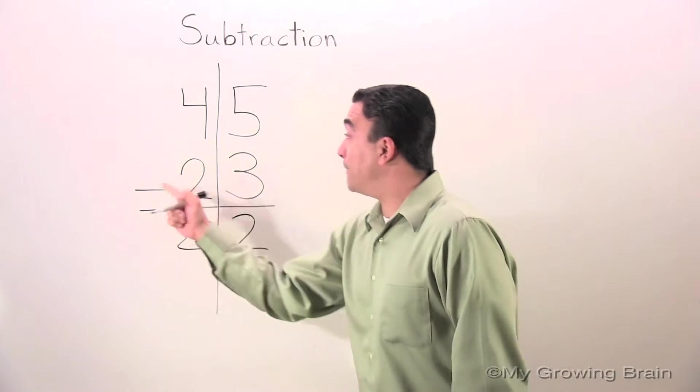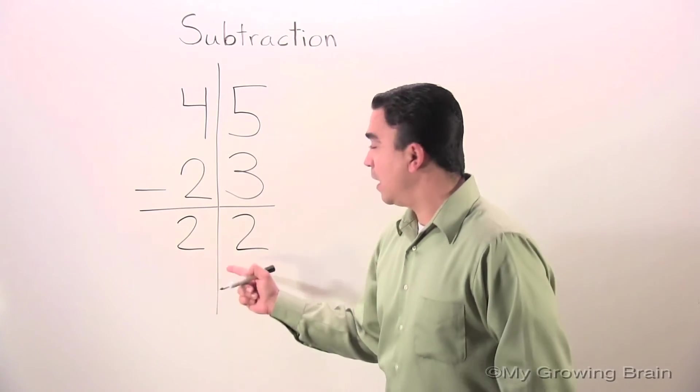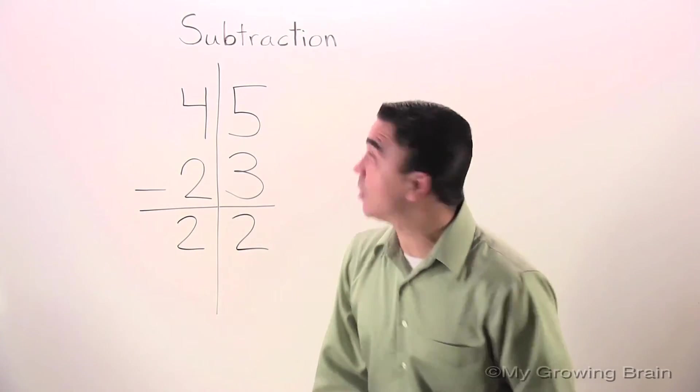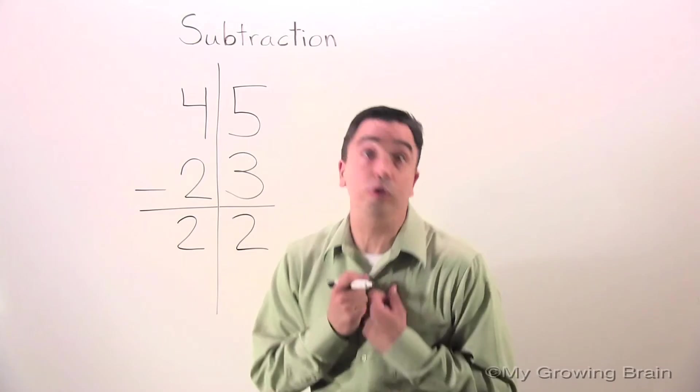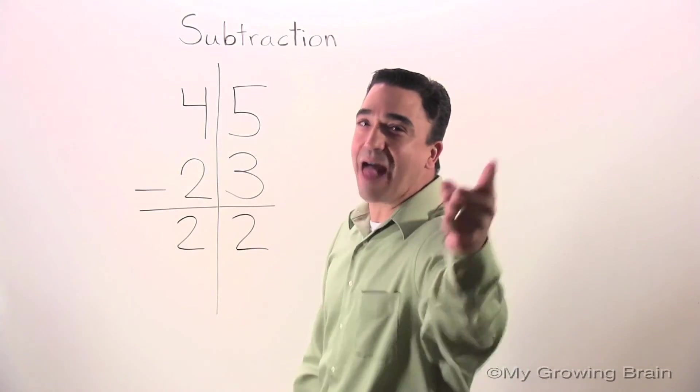45 minus 23 gives us a difference of 22. That concludes our lesson on subtraction. Coach Mike at My Growing Brain Challenge Yourself.